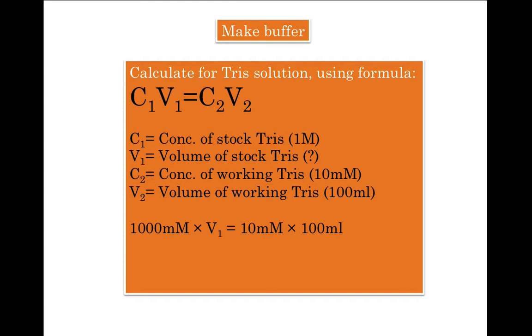So if we use the formula C1V1 equals C2V2, we will have 1 molar or 1000 millimolar times V1 equals 10 millimolar times 100 ml. So we will take 1000 millimolar on the other side of the equation, which will give us V1 equals 10 millimolar times 100 ml divided by 1000 millimolar. We will cancel all the zeros in the numerator and denominator, which will give us 1 ml. That means we need to just pipette out 1 ml of 1 molar Tris and dilute it by adding water and making up the volume to 100 ml. This will result in a solution which contains 10 millimolar Tris.